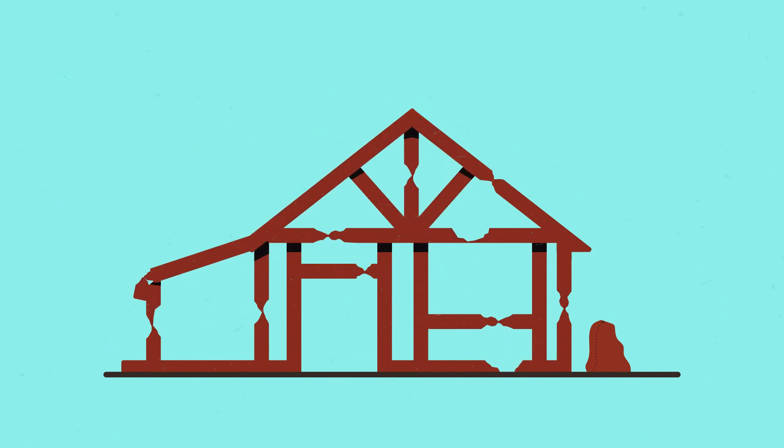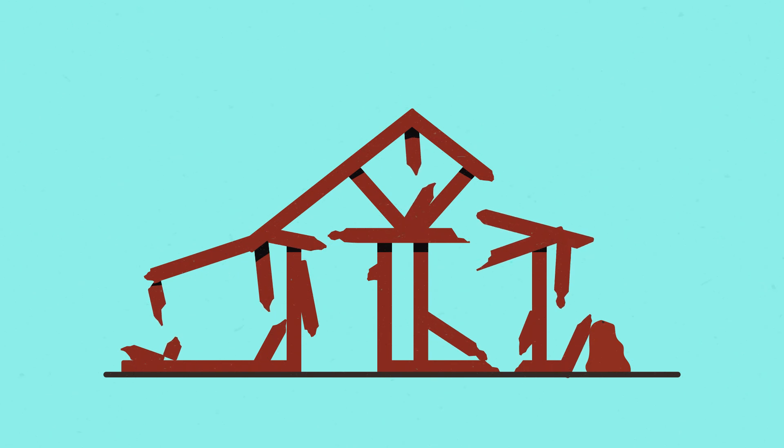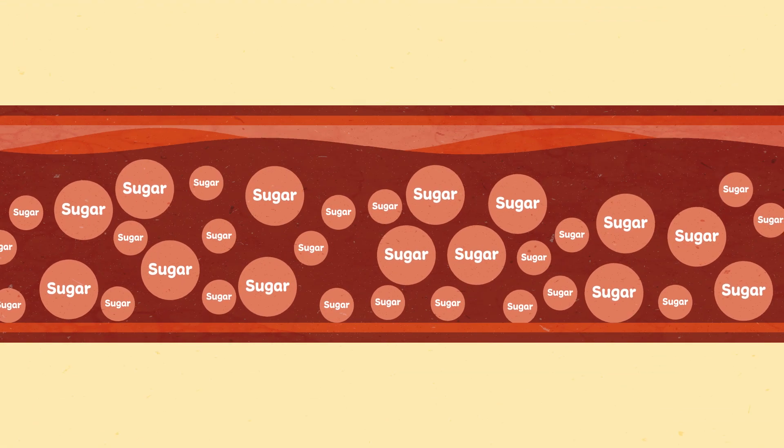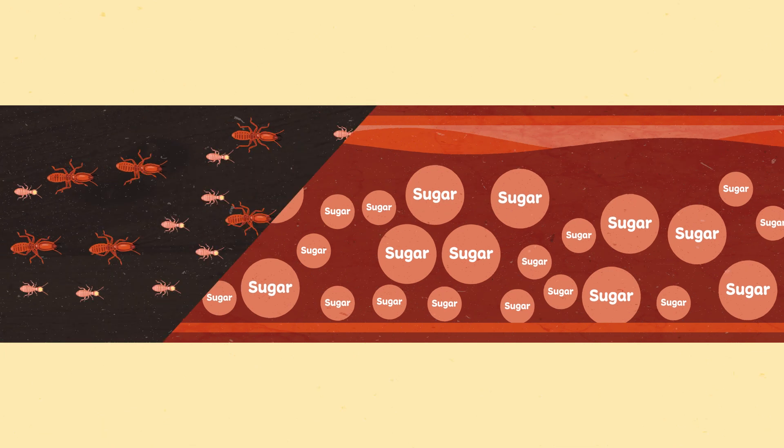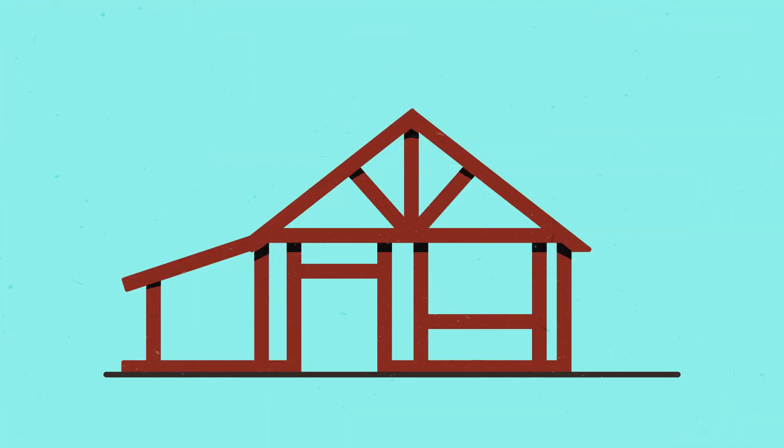If you don't fix the termites early enough, they can make your house very weak and unsteady. This is like diabetes. Even though you might not be able to see it, just like little termites, it is there. And you need to fix it before the house gets weak and falls down.